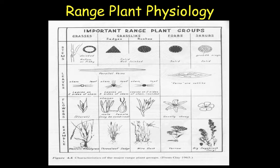However, our sedges and our rushes — those are going to be grass-like plants. And instead of having a hollow stem, they're actually going to have a solid stem. Our sedges tend to be triangular in shape, whereas rushes look more like rangeland grasses but they're solid-stemmed.